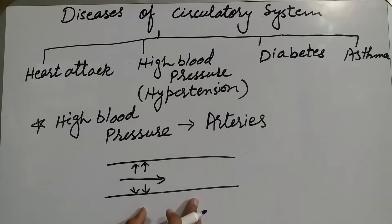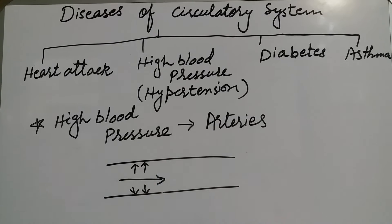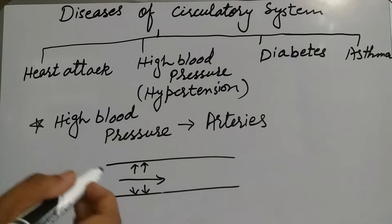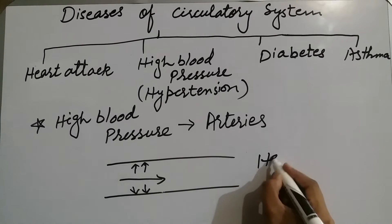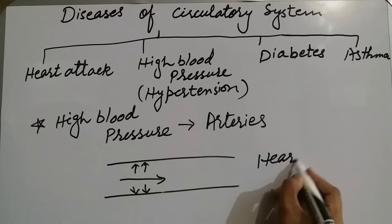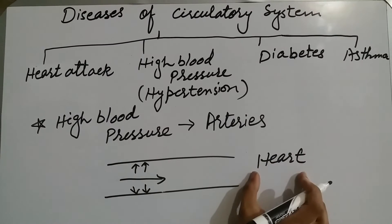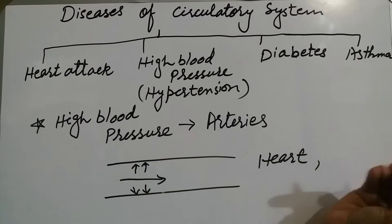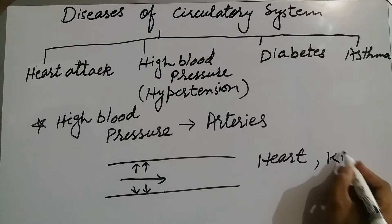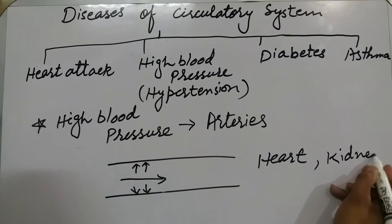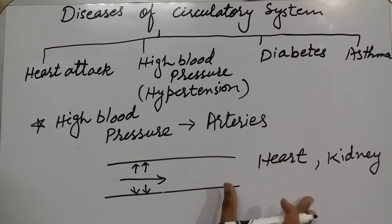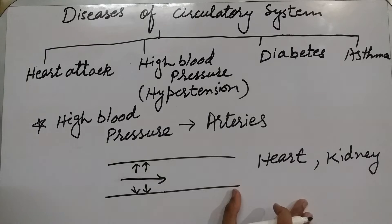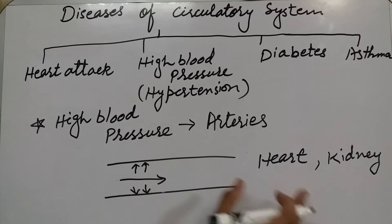جب pressure بڑھتا ہے تو جہاں supply جاری ہے، جیسے heart تک یا kidney تک یا کسی بھی body part تک — اگر اس pressure میں اضافہ ہو جائے تو اسے hypertension اور high blood pressure کہتے ہیں۔